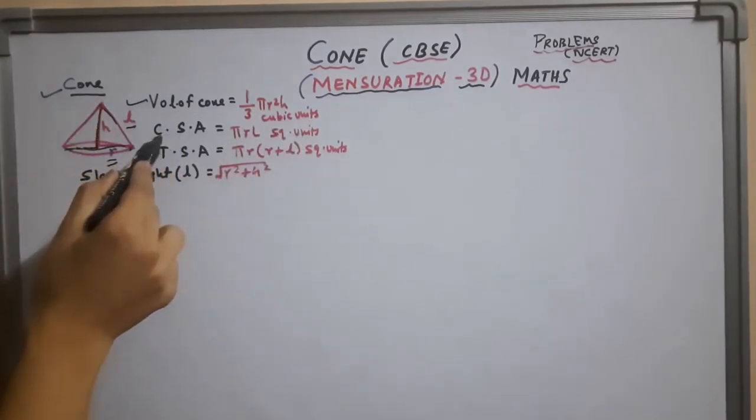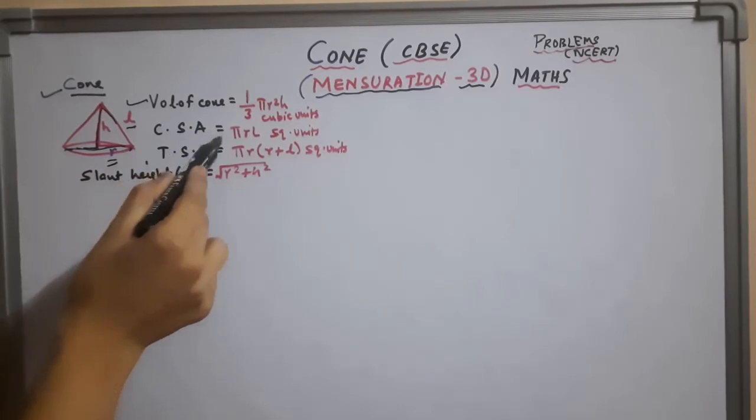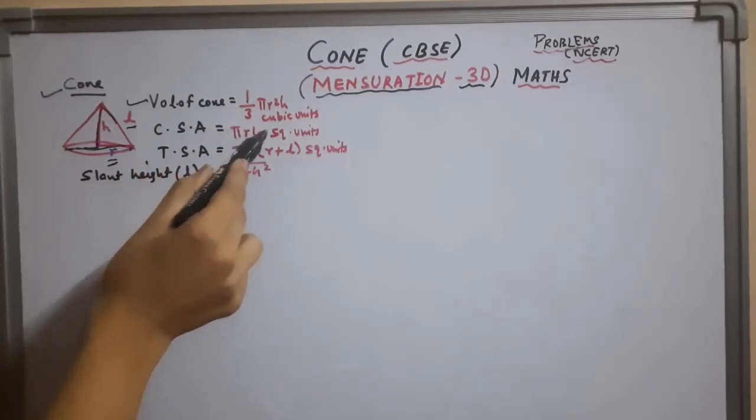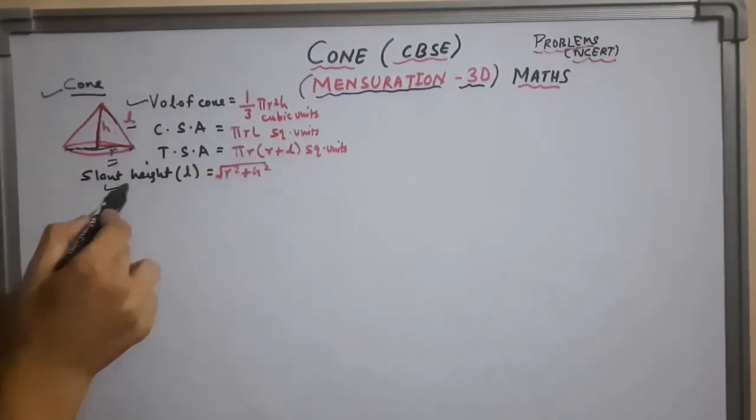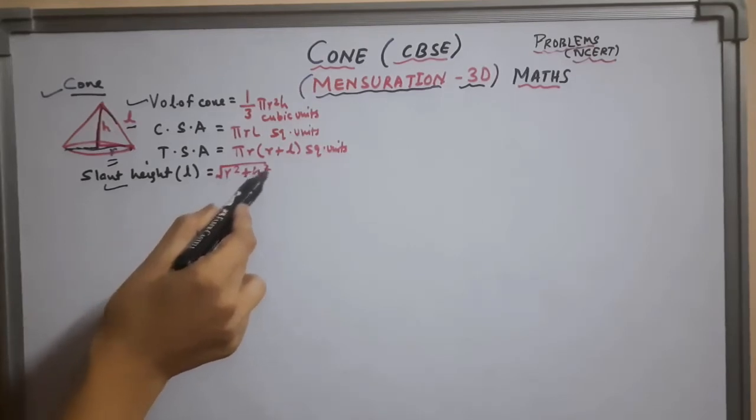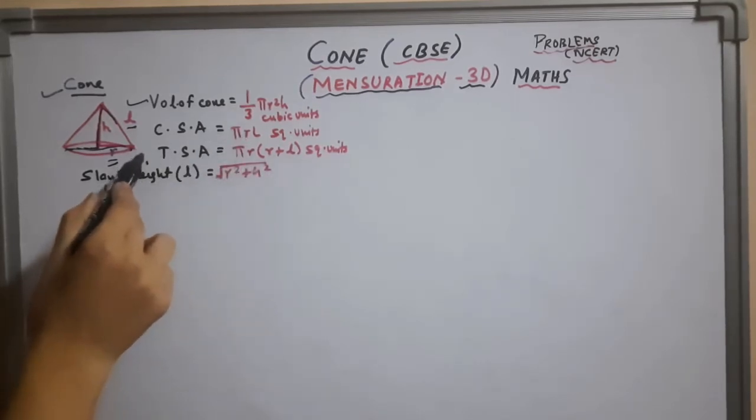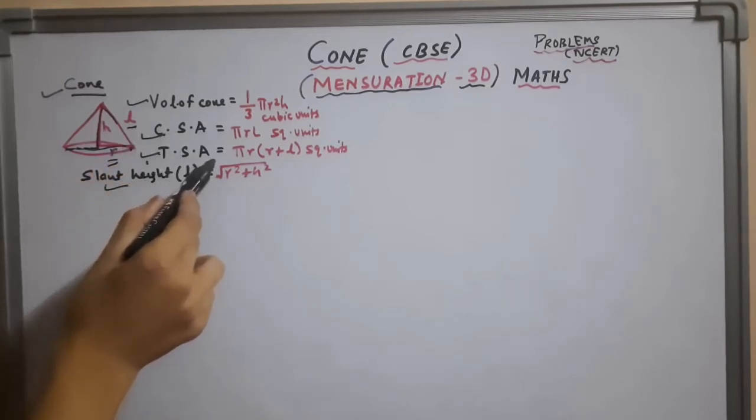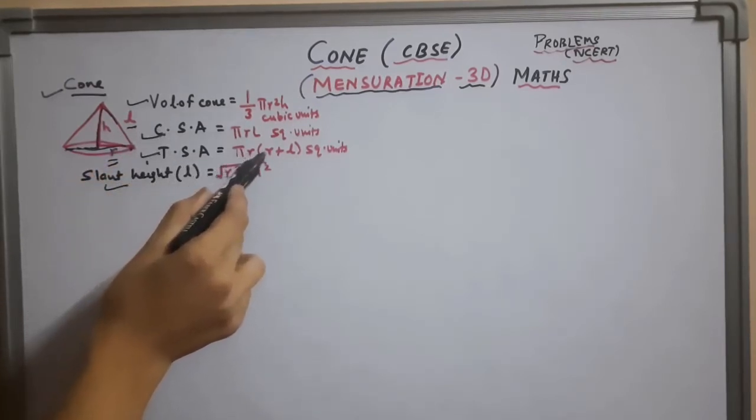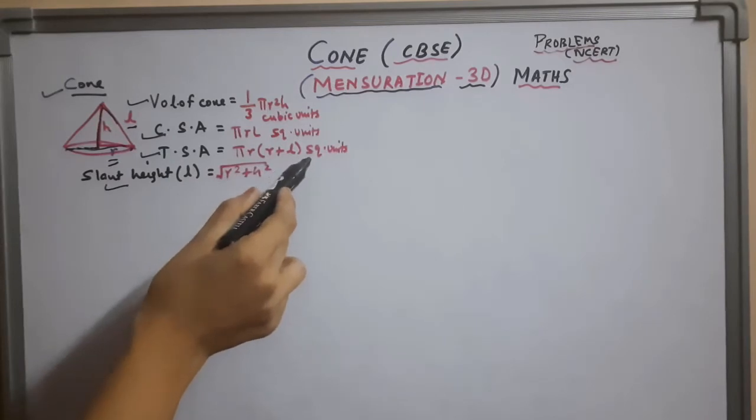Now the curve surface area, CSA in short, it is pi r l. l is slant height square units and slant height formula is l equals square root of r square plus h square. Now for total surface area, that is pi r times r plus l square units.